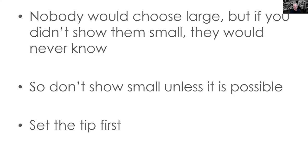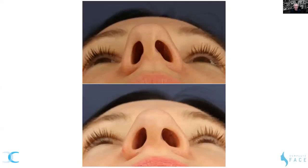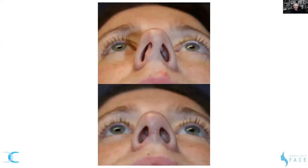Nobody would choose a larger nose, but if you don't show them the small and the large options they would never know. So work out where you want the tip when you morph it, and only show the patient that one. Don't show them something smaller, and if they ask for something smaller, tell them to see somebody else. Here is a much better shape — less boxy, with the tip slightly recessed and the septum straightened — giving a much more aesthetic tip.